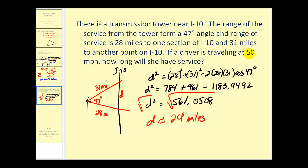Now, since the driver is traveling 50 miles per hour, the question really becomes how long will it take the driver to travel 24 miles, because that's how long the driver will have service from this transmission tower. So since distance equals rate times time, time would equal the distance divided by the rate. The distance is 24 miles and the rate is 50 miles per hour. This quotient will give us the time in hours, which is 0.48 hours.